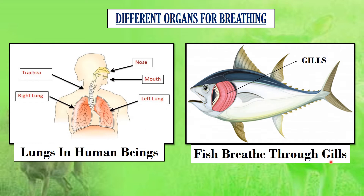The next organ is the gills. Animals like fish, crabs and prawns that live in water breathe through gills. Gills are feathery organs enclosed in pouches present on each side of the head of the animal. Gills absorb the dissolved oxygen present in water.